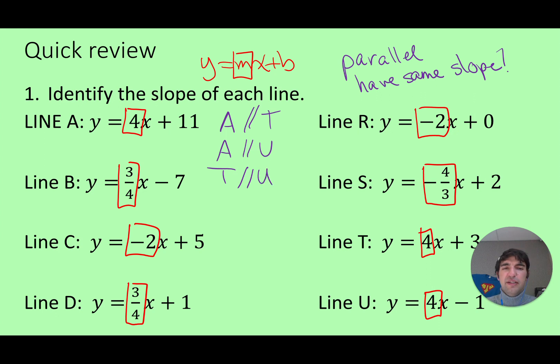Do I see any others? I think that B is parallel to D because I can see they both have a slope of 3 fourths, and C is parallel to line R. All right very nice.